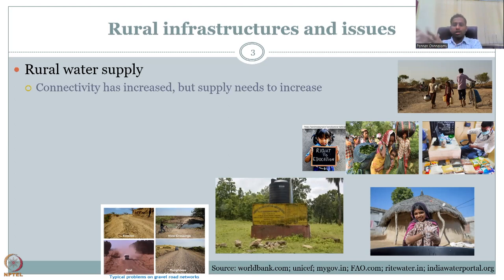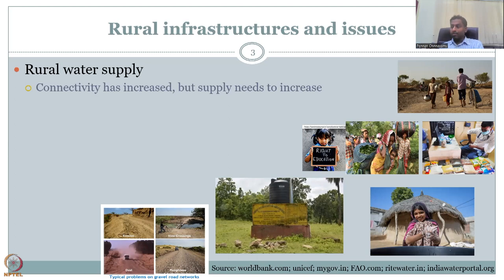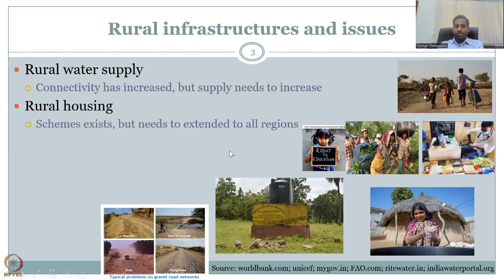The best way is first to give quick water access, which will improve their access to education — it's all indirectly but very strongly connected. The Jal Jeevan Mission has a very good impact on women's education: even though it's not under the education ministry, if water access is there, girl children will go to school. Then we have rural housing — the scheme exists, but needs to extend to all regions.